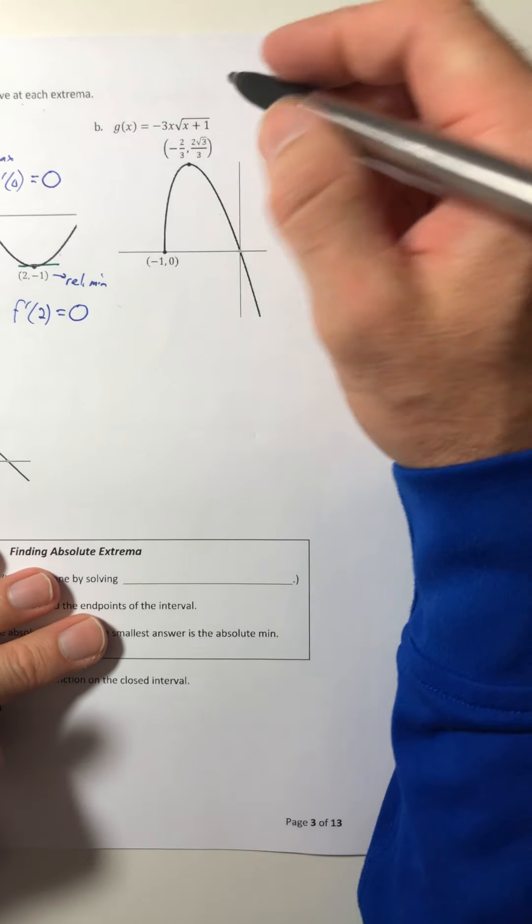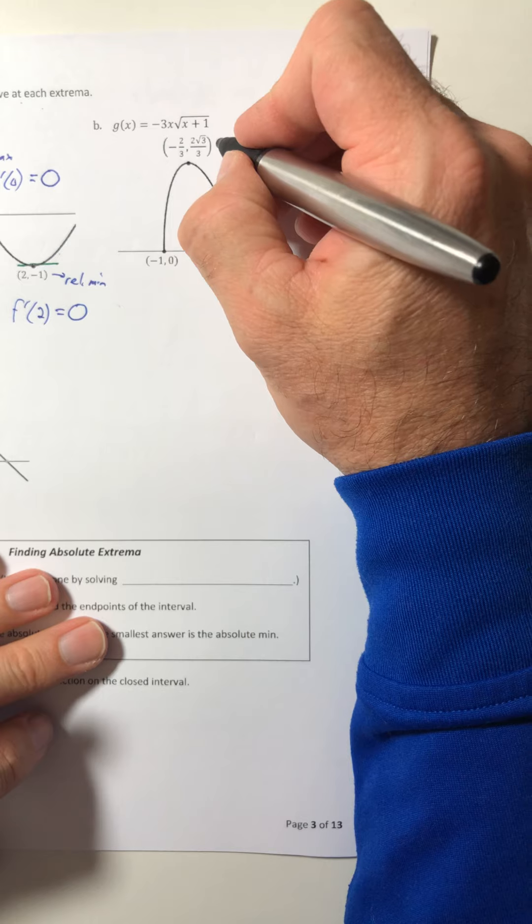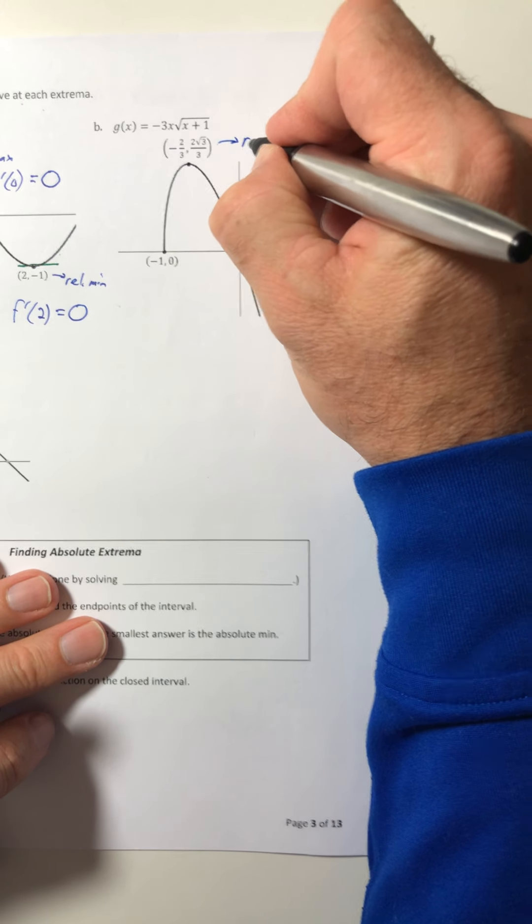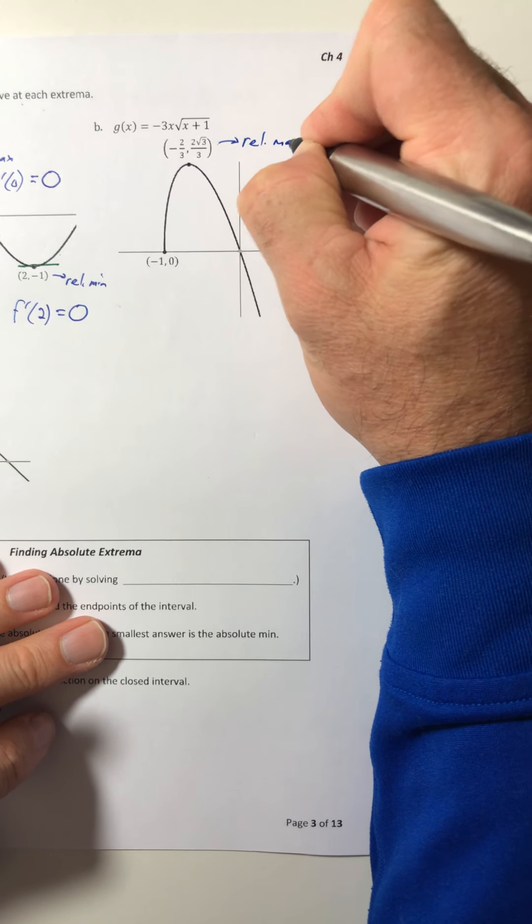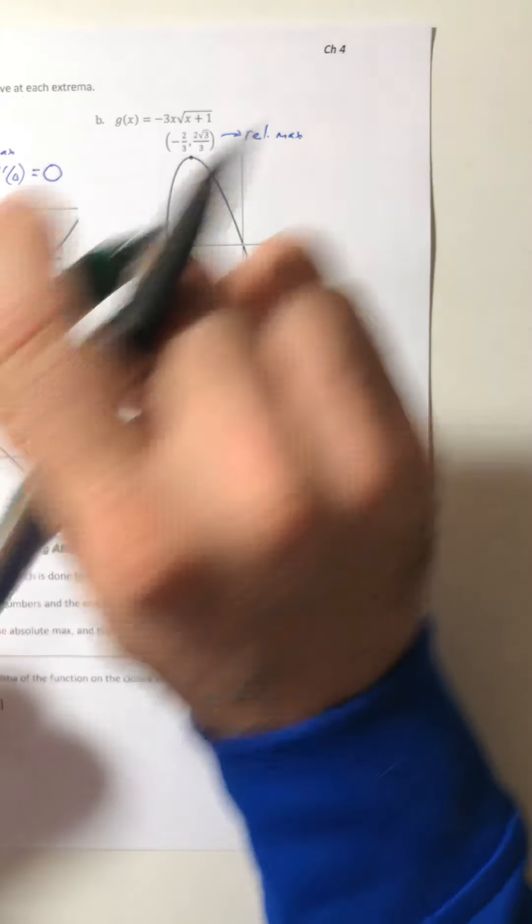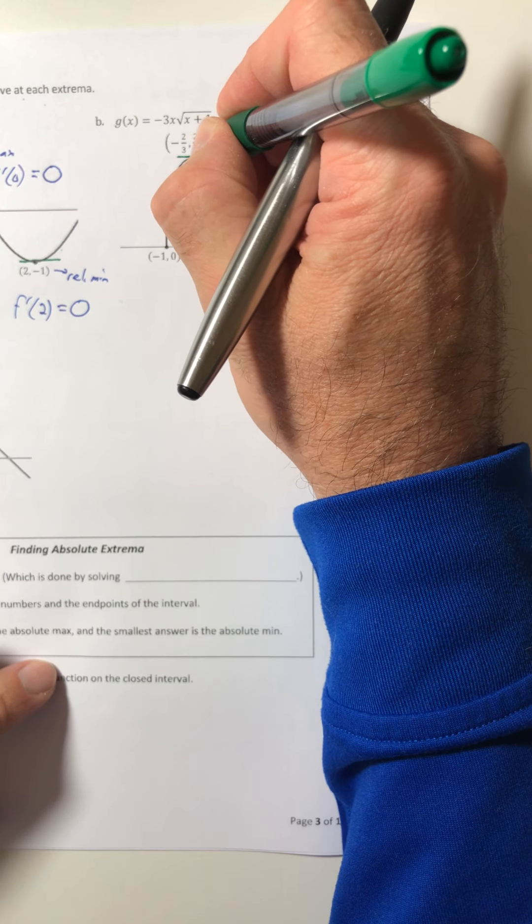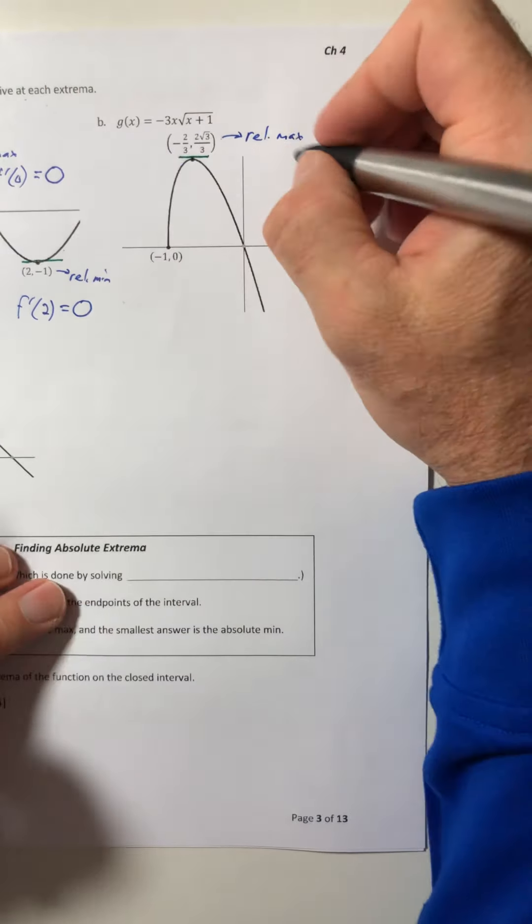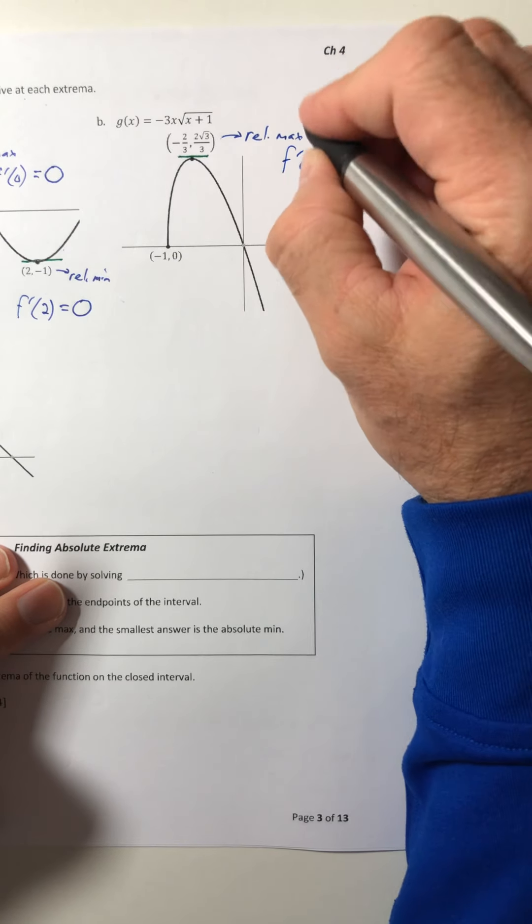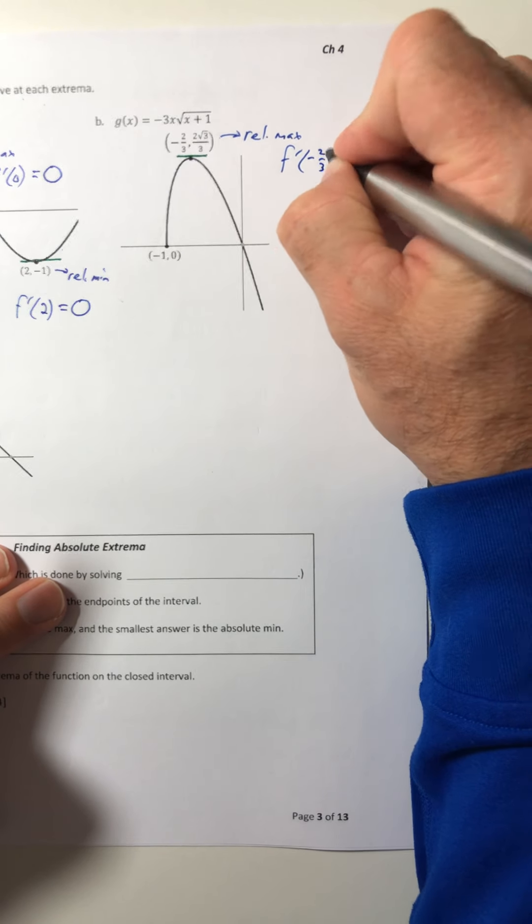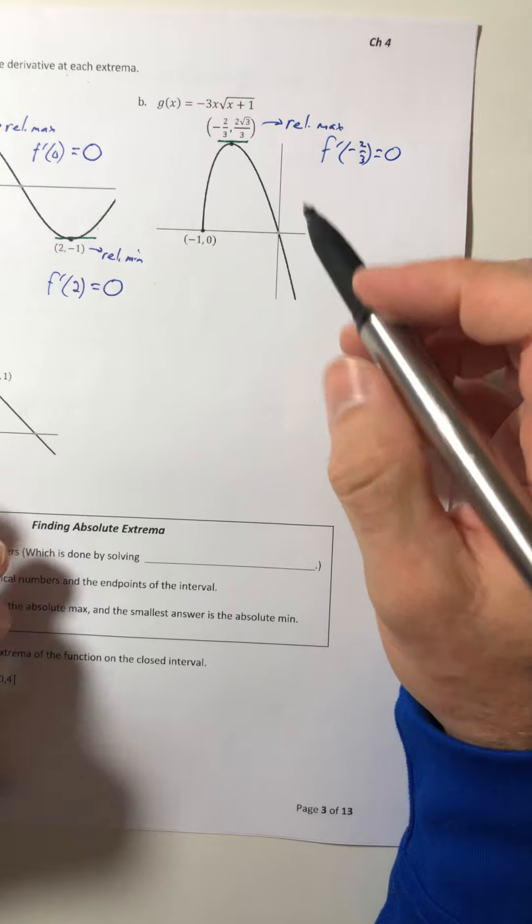Okay, part B, same thing. This point up here, that's a relative max with a horizontal tangent line. So f prime of negative two thirds is going to equal to zero.